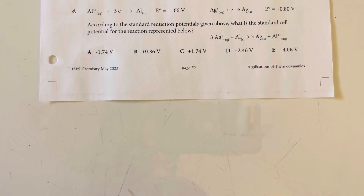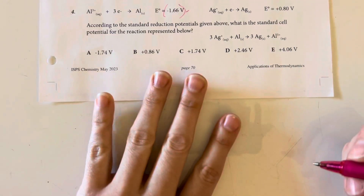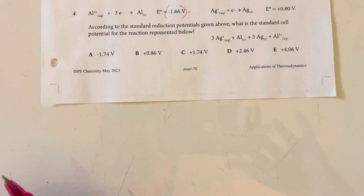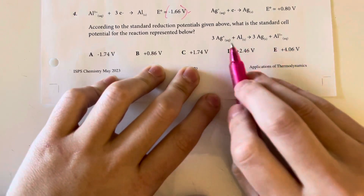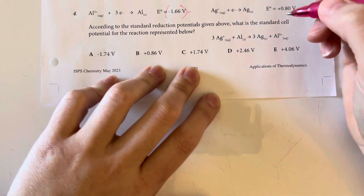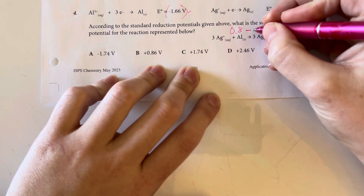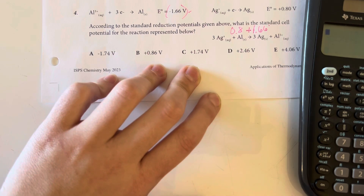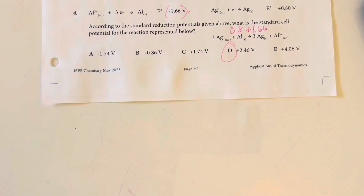According to the standard reduction potentials given, what is the standard cell potential for the reaction represented? We reverse one reaction and change its sign, and since this is favorable we use cathode minus anode. The cathode is the reduction of silver at 0.8 volts, minus negative 1.66, which effectively adds to give 0.8 plus 1.66, yielding 2.46 volts — option choice D.